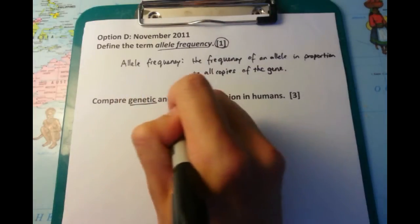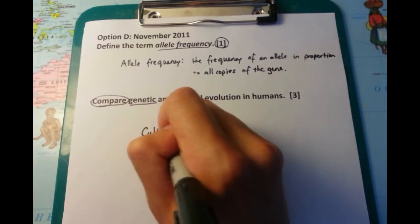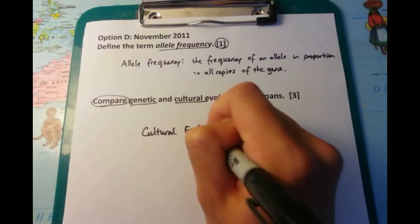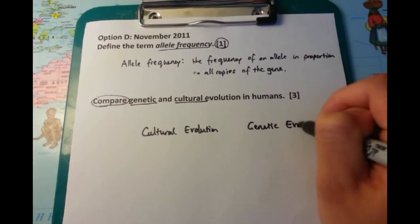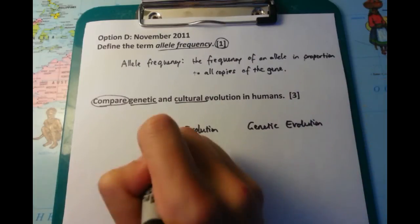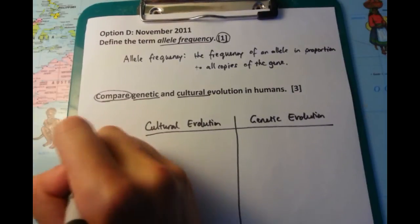The next question is comparing genetic and cultural evolution in humans. Whenever I see a compare question, I'll usually put it into a tabular format, and that's what I'm doing here. I'm putting cultural evolution on the left and genetic evolution on the right.